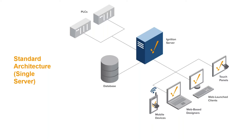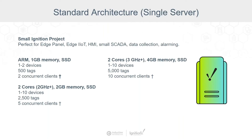There's also a companion document, so you don't need to be furiously scribbling down notes or rewatch this webinar to get this reference information. If we're talking about a small Ignition project with just a handful of tags, devices, and clients, something as small as an ARM device — that would be a Raspberry Pi or something similar, ideally industrialized — Ignition can absolutely run on that. We recommend running very small systems on that.